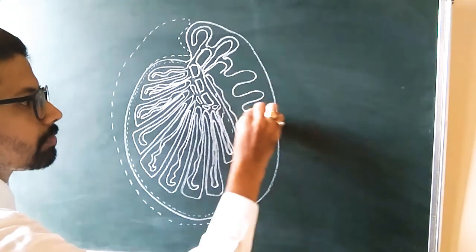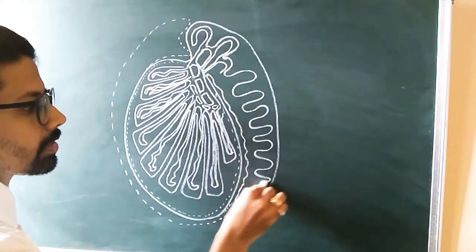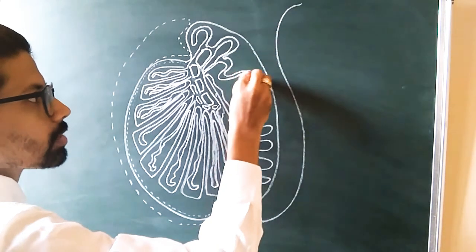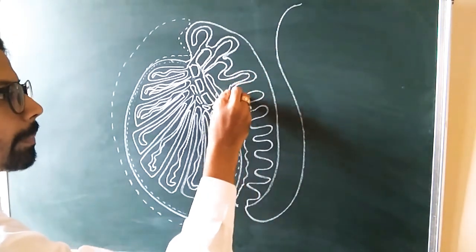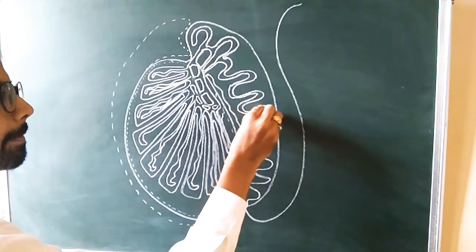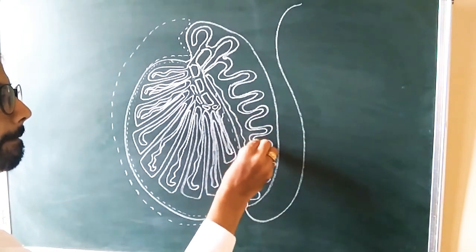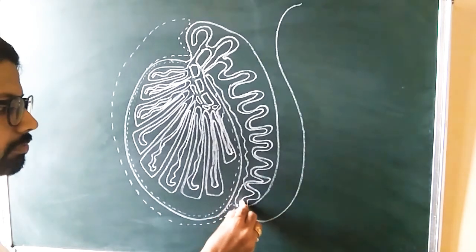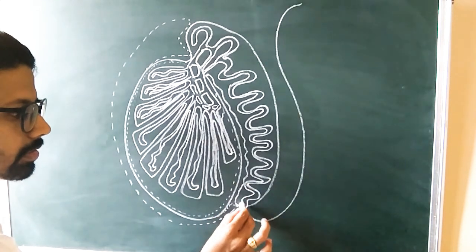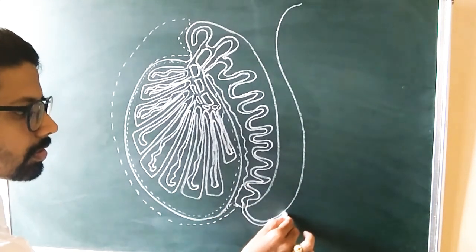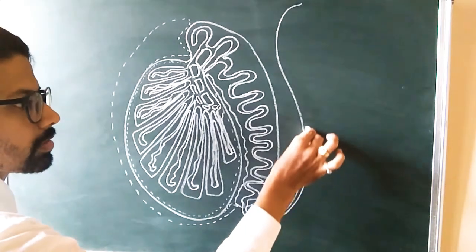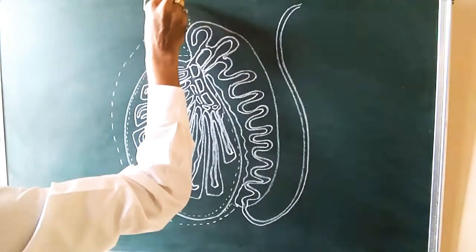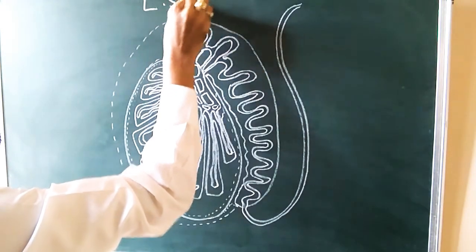This vas deferentia continues inside the epididymis and forms a single duct outside, also called vas deferentia. At this region it continues as a duct called vas deferentia.